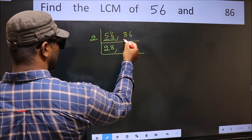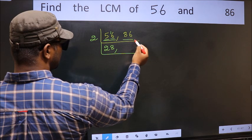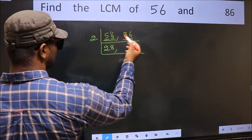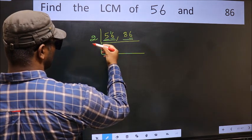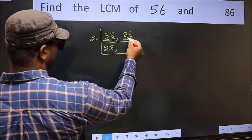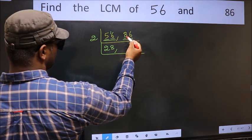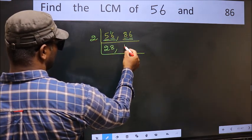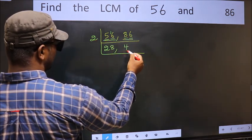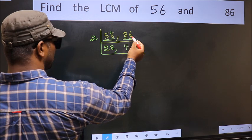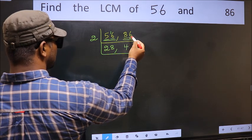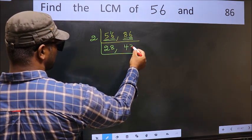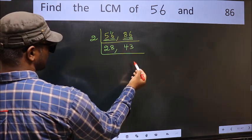The other number is 86. Last digit is 6, so this is also divisible by 2. The first digit is 8; when do we get 8 in the 2 table? 2 fours are 8. The next digit is 6; when do we get 6 in the 2 table? 2 threes are 6.